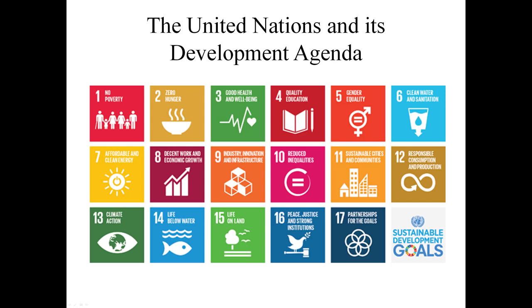Looking at the visual here, this is representative of the UN's sustainable developmental goals, of which there are 17. Many of them are very broad, certainly well-intentioned, but you've got to think how does one achieve some of these goals: no poverty, zero hunger, good health and well-being, quality education, gender equality, clean water and sanitation, affordable and clean energy, decent work and economic growth, industry innovation and infrastructure, reduced inequality, sustainable cities and developments, responsible consumption and production, climate action, life below water, life on land, peace, justice, and strong institutions, and finally partnerships for achieving the previous 16 goals.